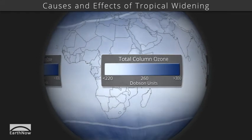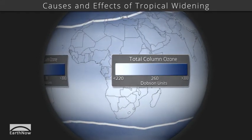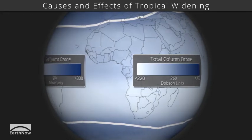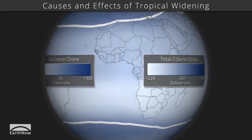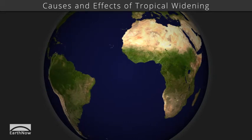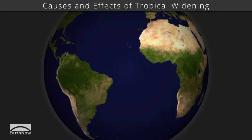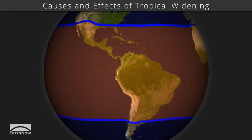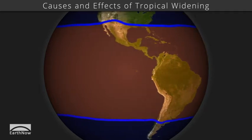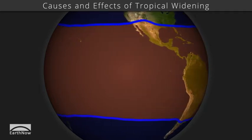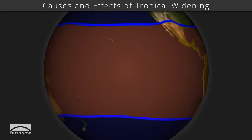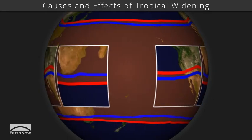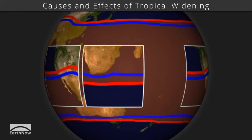The measurable change in total column ozone between the tropics and subtropics is used to identify the boundary, shown here as a white line. A change in the extent of the tropics has occurred over the last few decades. The five-year average boundary of the tropics between 1980 and 1984 is shown here as blue lines. The five-year average between 2008 and 2012 is shown as red lines.